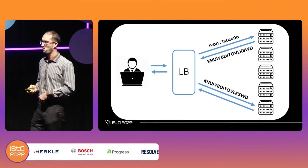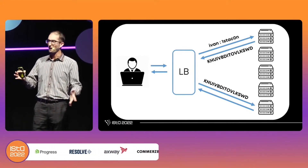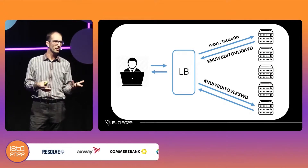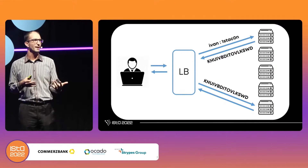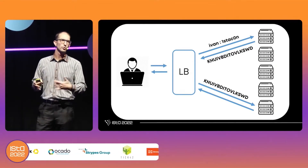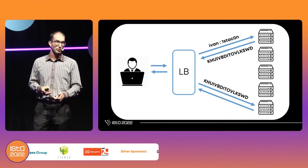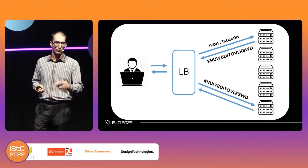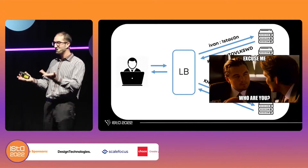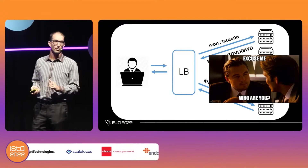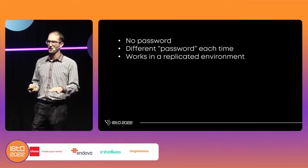What if we take the server and replicate it multiple times — very common for modern apps — and put a load balancer in front of it? Ivan sends a request with his credentials and the first server returns a session ID. On a subsequent request, the load balancer routes to a different server — that server says 'excuse me, but who are you?' That server does not know who that person is. This is the third problem we need to fix for a replicated environment.